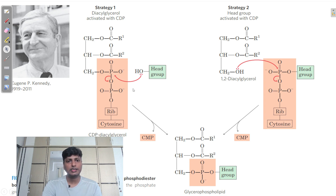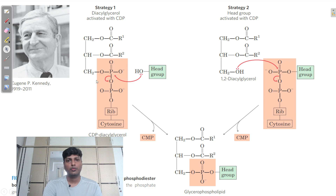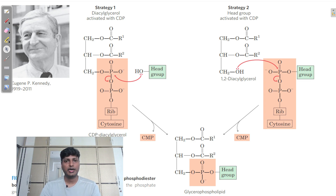In the first strategy, CDP-diacylglycerol is formed first, then attached to the head group. In the second strategy, CDP first attaches to the head group, and then this entire structure attaches to the OH group of 1,2-diacylglycerol. In both strategies, one CMP is removed and the final result is a particular type of phospholipid.